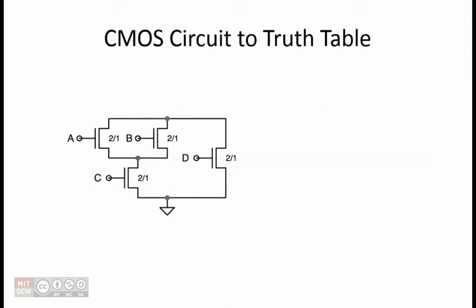Given the CMOS circuit with pull-down shown here, we can generate the corresponding function that the CMOS circuit represents, which is NOT F equals A or B anded with C or D. So F equals A or B anded with C or D, the whole thing negated.